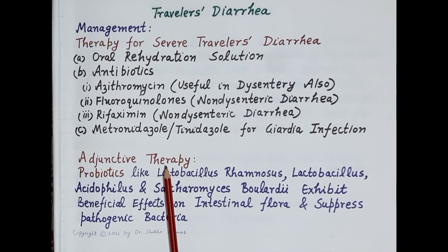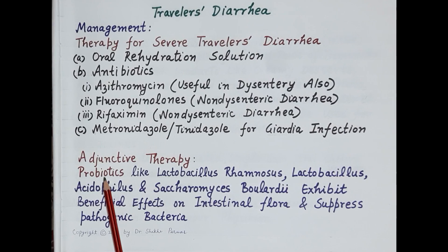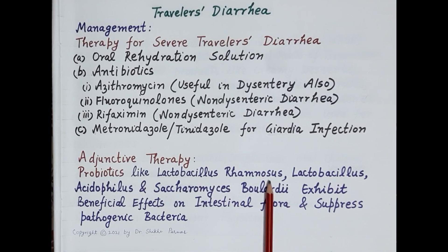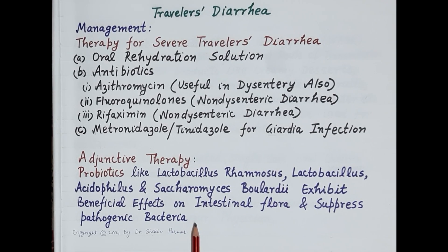For adjuvant therapy, administration of probiotics is found to be very useful. Probiotics are live microorganisms that, when administered in adequate amounts, provide benefit to the patient with diarrhea. They are dietary supplements containing beneficial bacteria that strengthen the digestive system and provide immunity. Probiotics like Lactobacillus rhamnosus, Lactobacillus acidophilus, and Saccharomyces boulardii exhibit beneficial effects on intestinal flora, suppress pathogenic bacteria, and are useful in prevention of diarrhea.